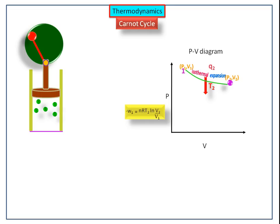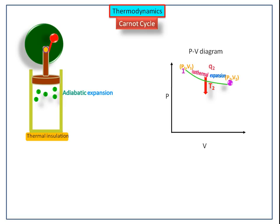Now the cylinder is thermally insulated, so no heat is exchanged between the system and the surroundings. The piston expands, so the gas molecules undergo adiabatic expansion and the position moves to 3, where the pressure and volume are P3 and V3. The work done for adiabatic expansion is: −W2 = −NcV(T2 − T1). The work done values for isothermal and adiabatic processes were already discussed in previous videos.